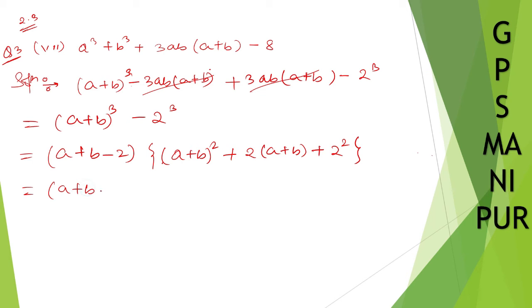So, (a+b) - 2, (a+b)² is a² + 2ab + b², plus 2 into a, 2a, plus 2 into b, 2b, plus 2 to the 4.